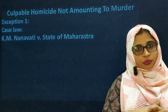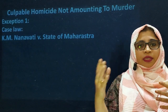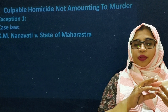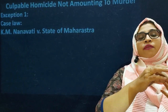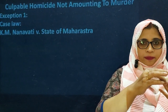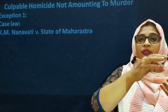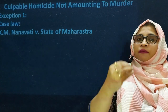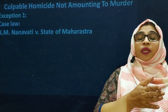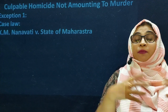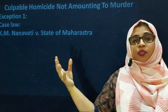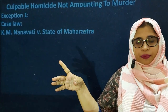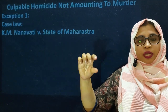Now we go to a case law: K.M. Nanavati versus State of Maharashtra. Nanavati was a naval officer; his wife's name was Sylvia and he had three children. Sylvia had illicit intimacy with a person named Ahuja. Nanavati came to know the complete story between his wife and Ahuja. One day, he went to Ahuja's residence with a revolver. A heated communication happened between both parties, they abused each other, and Nanavati shot Ahuja, who died.